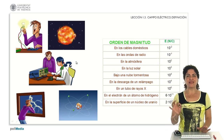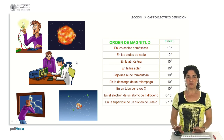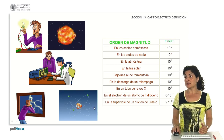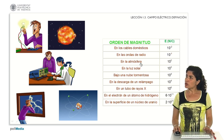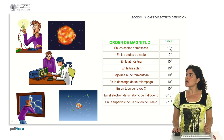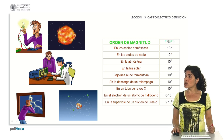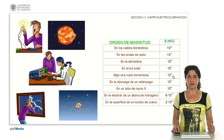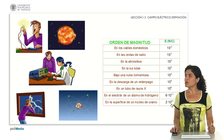The electric field is due to the presence of charges in space, but beyond electrostatics it is present in many everyday phenomena: in current cables, electromagnetic waves, and interactions between electrons and atomic nuclei. In a summary table we can see the orders of magnitude of electric field intensity in different configurations — from domestic cables at around 10⁻² N/C, through radio waves and storm clouds at around 10⁴ N/C, up to the surface of a uranium nucleus at 2×10²¹ N/C.